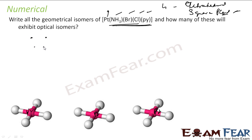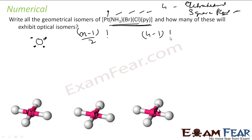This is essentially a math problem: four different ligands (people) arranged around a square planar center (round table) where clockwise and counterclockwise arrangements are the same. The formula is (n-1)!/2. With four different ligands, this gives 3 possible geometrical isomers. So we have three distinct arrangements to draw.